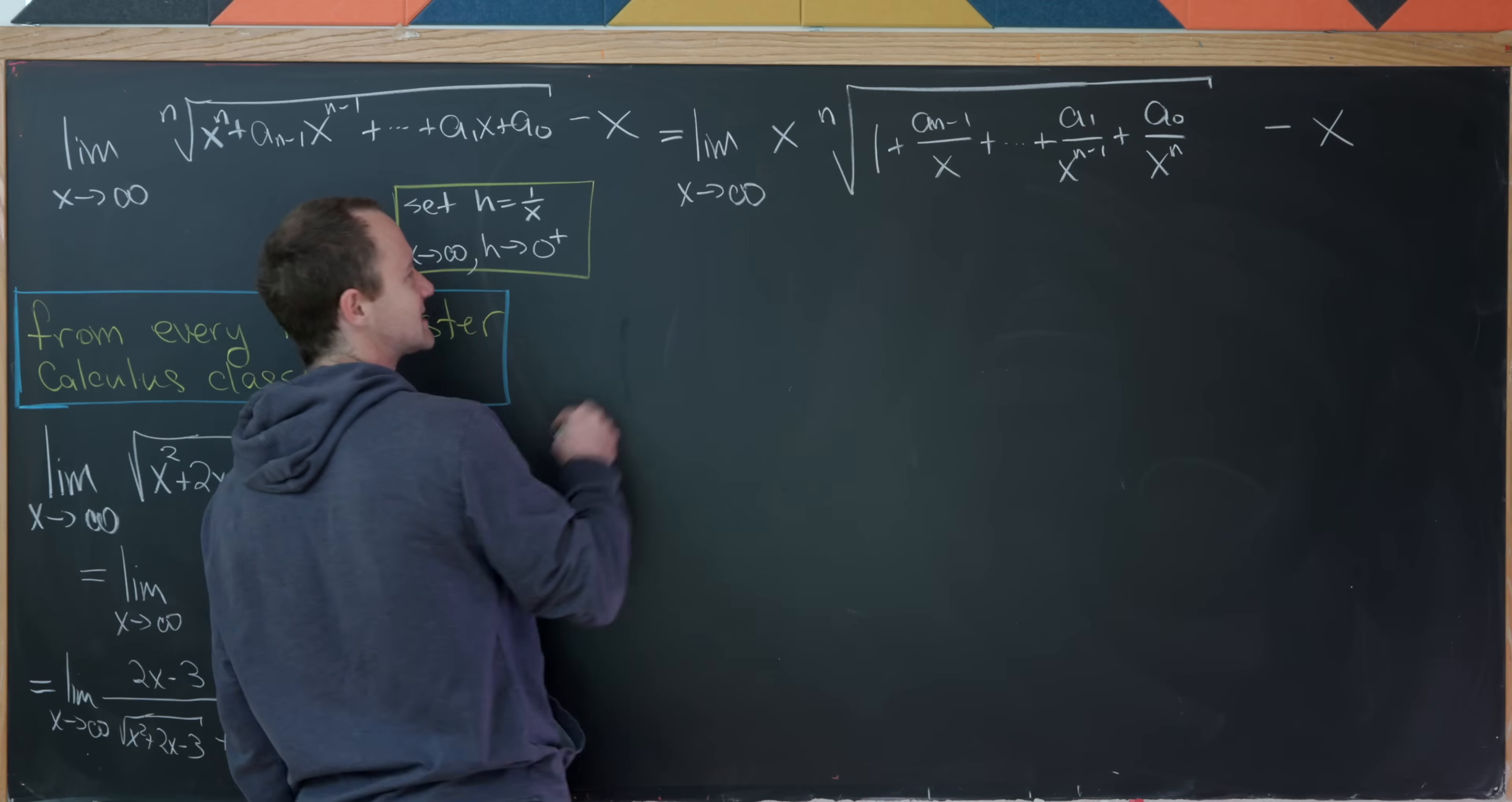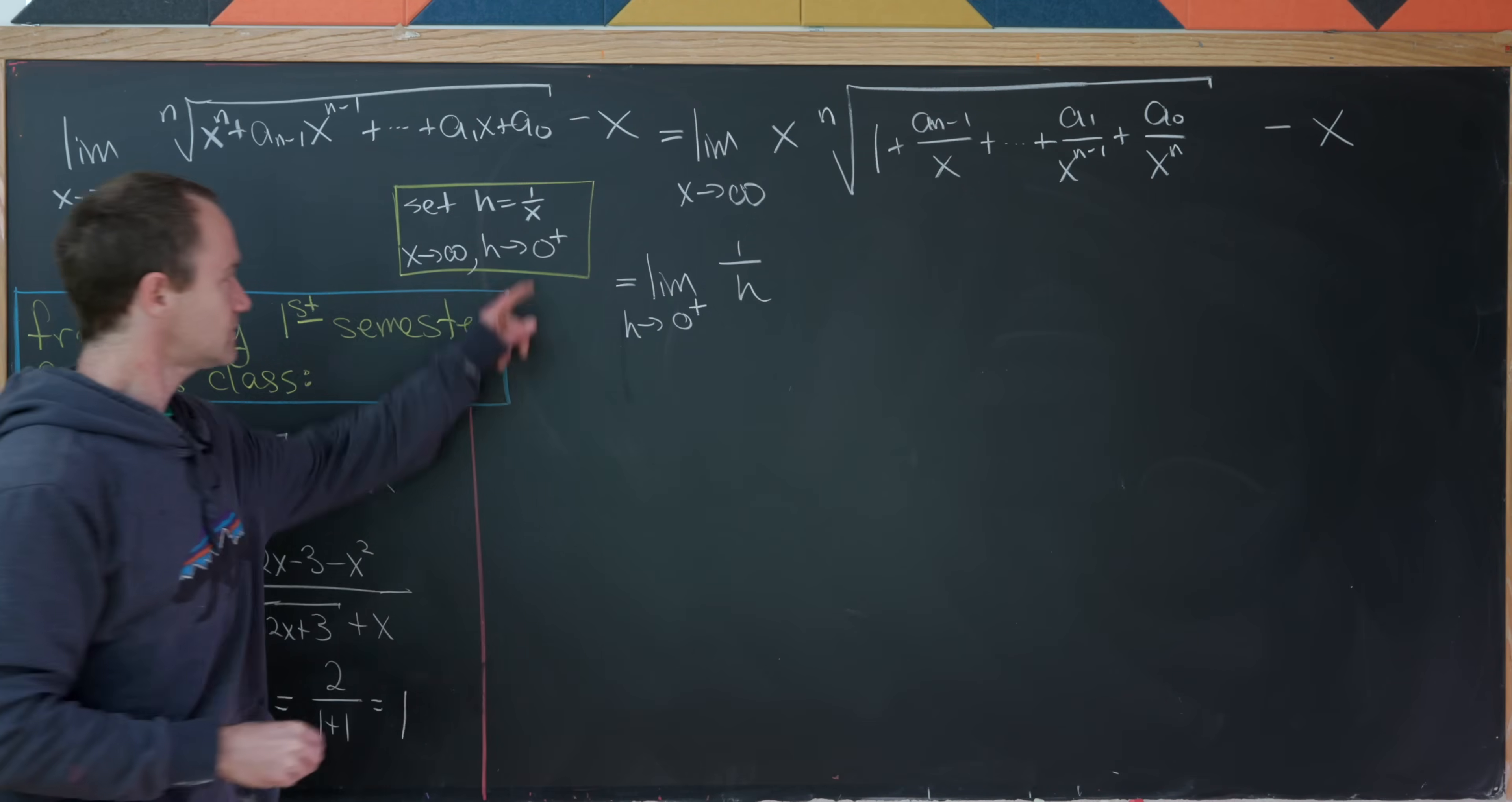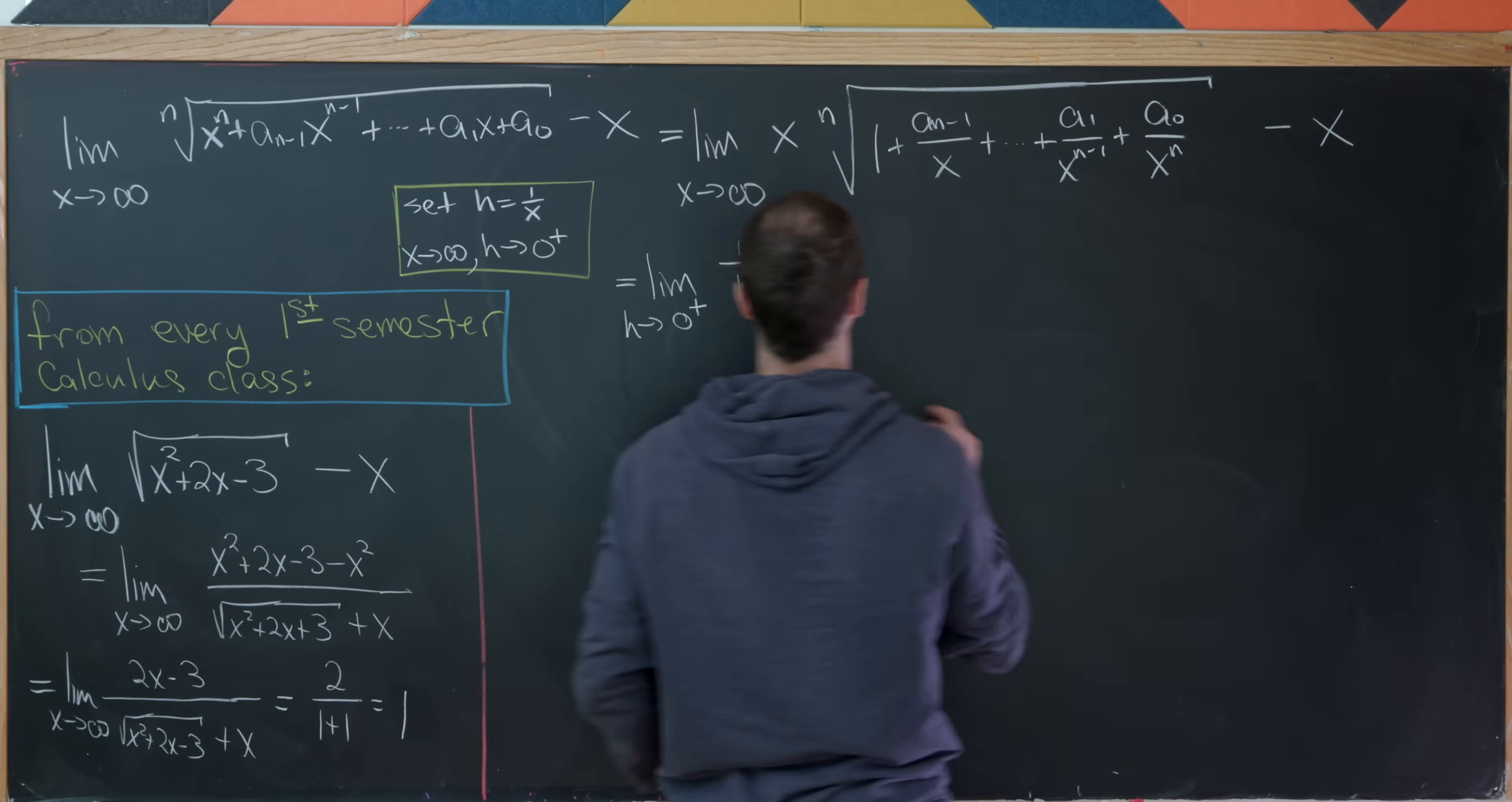Okay, so that's going to leave me with something like this. We have the limit as h goes to 0 from above of 1 over h, because if h is 1 over x, x is 1 over h. But I'll actually factor that out of this whole thing because I've got an x term on both.